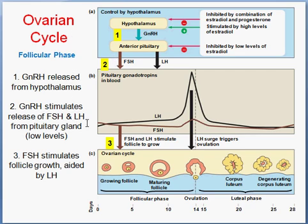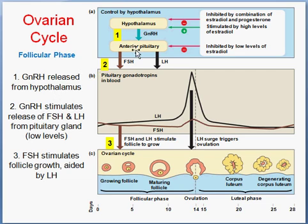The start of the menstrual cycle always starts from the hypothalamus. The first step is the ovarian cycle, which has two phases: the follicular phase and the luteal phase. It starts when the hypothalamus secretes the hormone GnRH — gonadotropic releasing hormone. That triggers the anterior pituitary gland to release the hormones FSH and LH, which work hand in hand to stimulate follicular growth.